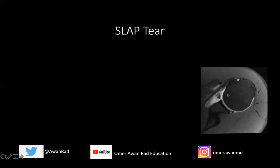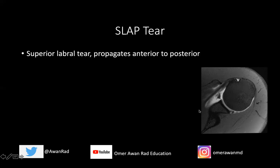This is an axial T1 fat sat image in the same patient through the labrum at the superior level. This is the sublabral fragment I was describing, where the labrum is unattached to the glenoid, creating a contrast cleft between the triangular labrum and the glenoid. You can also see contrast within the posterior labrum in this SLAP tear — bright signal is going into the substance of this triangular dark structure, which is the posterior labrum. The tear propagates in an anterior to posterior direction.